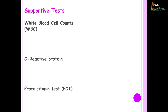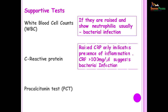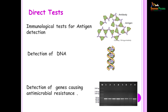The supportive tests include doing the WBC count. If these are raised and show neutrophilia then you could usually think of this as a bacterial infection. Raised C-reactive protein only indicates the presence of inflammation; however, values of more than 100 milligram per microlitre suggest a bacterial infection. Procalcitonin, if it is low, one can safely say that the person is not suffering from an infectious disease; however, if you want to demonstrate its presence in a bacterial infection you have to show a rise in titer for it to be of any significance.